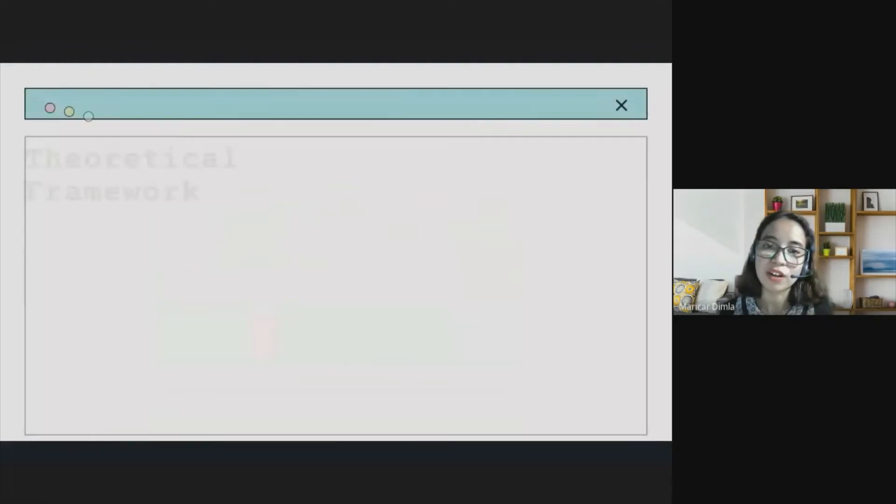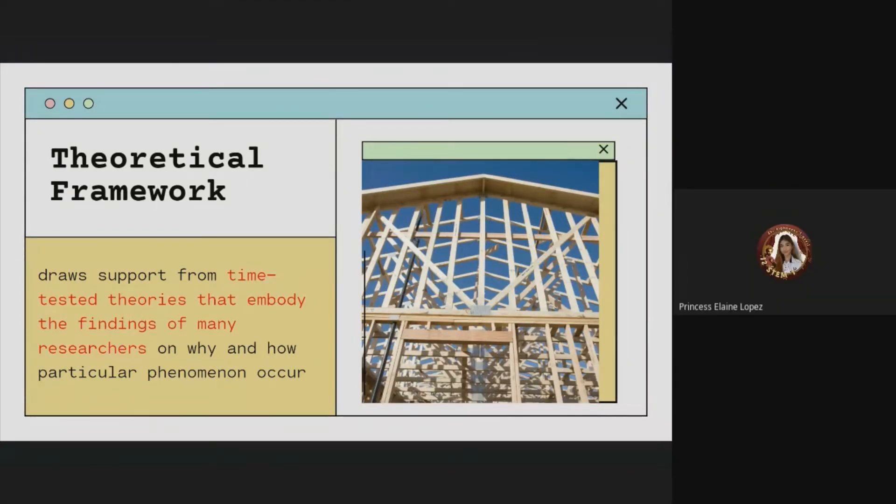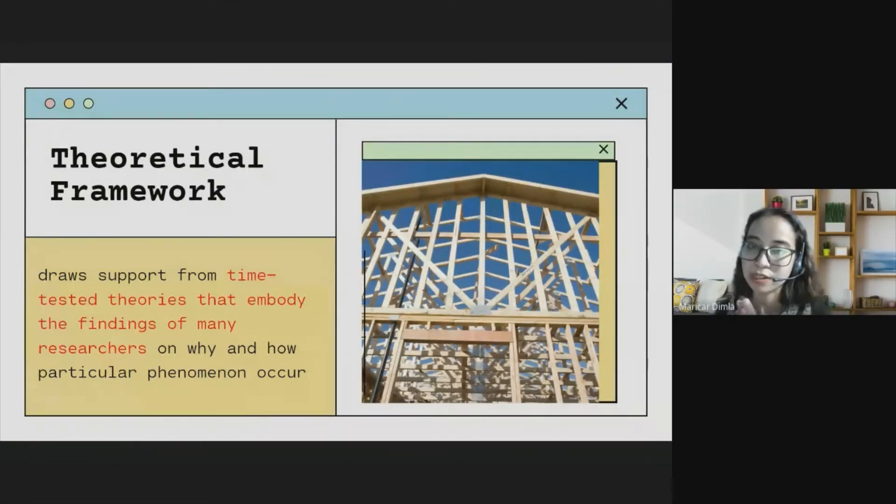Now let's have the theoretical framework. Theoretical framework draws support from time-tested theories that embody the findings of many researchers on why and how particular phenomenon occur. Exactly. Class, remember this. The essence of related literature and studies to your paper is for you to have a very good conceptual framework. Aside from a very good statement of the problem.